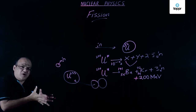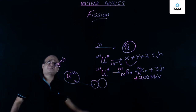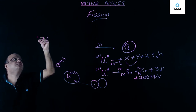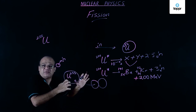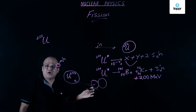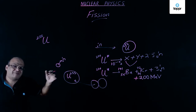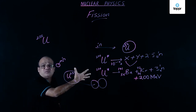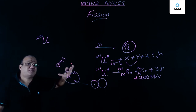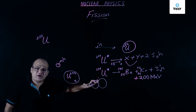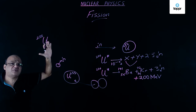We also want the neutrons to slow down, because fast neutrons can cause fission of U-238 as well, and we only want U-235 to fission. So we use something called a moderator. A graphite core is used as a moderator to slow down neutrons, and heavy water D₂O is also used for this purpose. The moderator slows down neutrons so that only U-235 undergoes fission, not U-238.